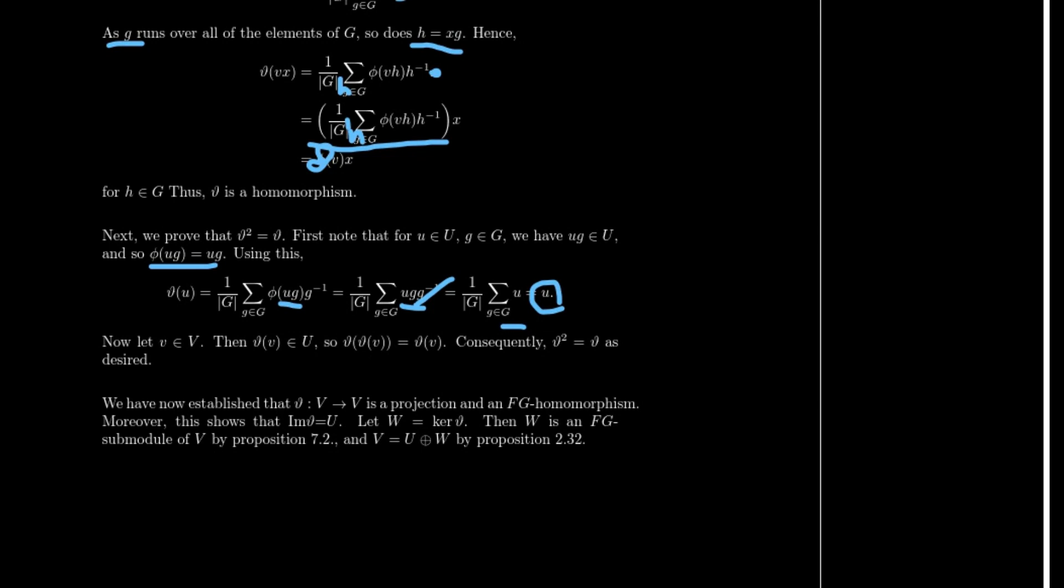So let V be in V. Then θ of V is also going to be in U. So θ of θV is simply going to be θV. Consequently, θ squared equals θ as desired.